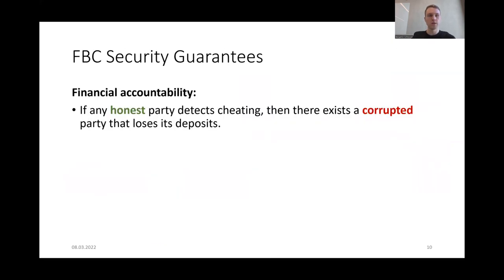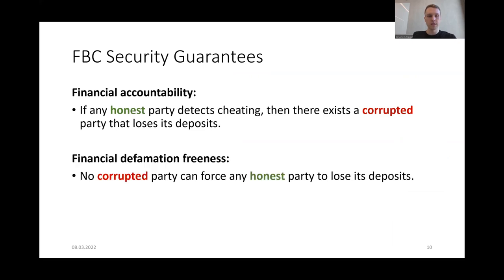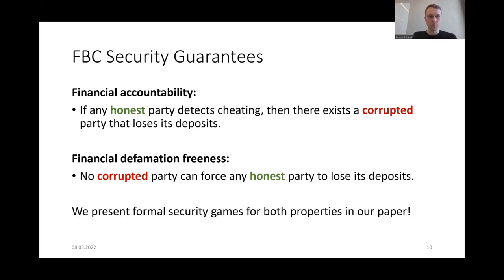We require two security properties of FBC protocols. The first is called financial accountability: it states that if an honest party detects cheating, then there exists a corrupt party that loses its deposit. The second property is called financial defamation freeness and states that the adversary cannot force an honest party to lose its deposits. While these security properties are analogous to PVC protocols, we are the first to present formal security games for both properties.